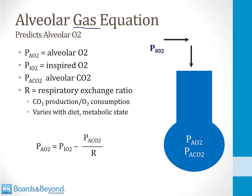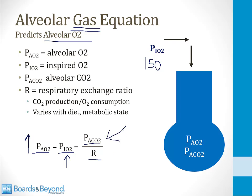Now let's move to the alveolar gas equation, which predicts the alveolar oxygen level — just as the alveolar ventilation equation predicts alveolar CO2. The alveolar gas equation states that alveolar oxygen concentration equals the oxygen in inspired air minus the alveolar CO2 content divided by R, the respiratory exchange ratio. If you inspire more oxygen — higher PIO2 — that raises your alveolar O2. Breathing 21% oxygen at sea level gives a PIO2 of 150. R is usually 0.8.